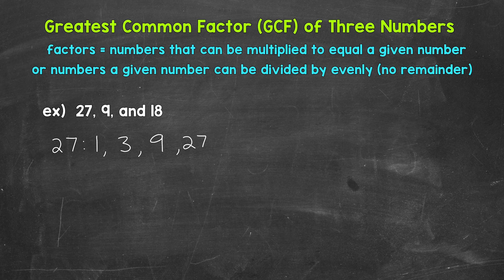You can always think about other possible factors if you're unsure if you're done — for example, 2, 4, 5, 6, and so on. But we have them all: 1, 3, 9, and 27. We can also think of these factors in terms of division — we can divide 27 evenly by all of these factors.